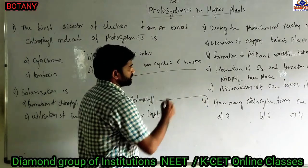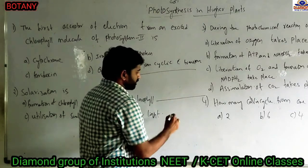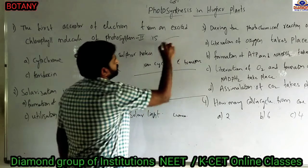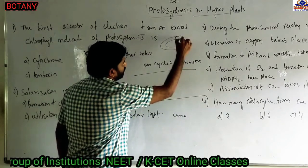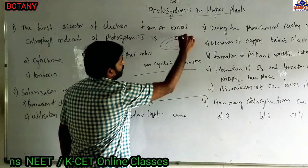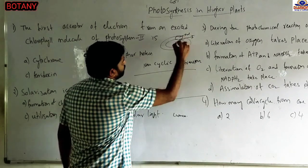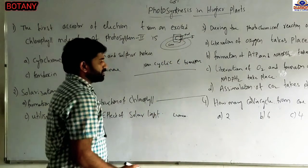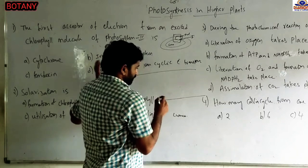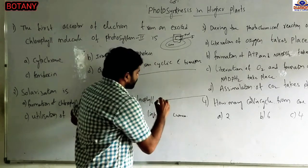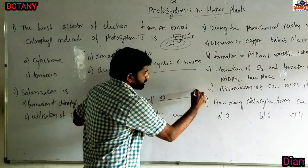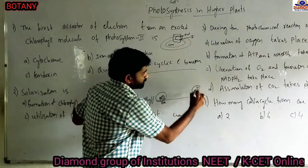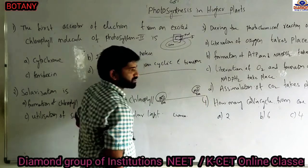Thylakoids have two membranes — an outer membrane and an inner membrane. In this non-cyclic electron transport system, two photosystems are involved: photosystem 2 and photosystem 1. Photosystem 2 receives 680 nanometers of light, and photosystem 1 receives 700 nanometers of light.